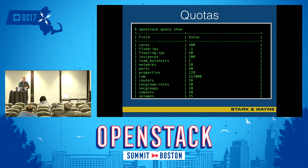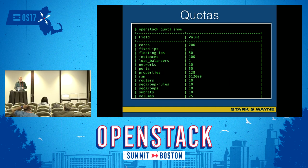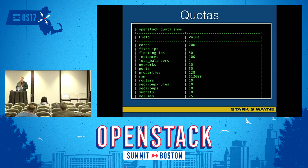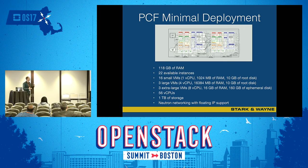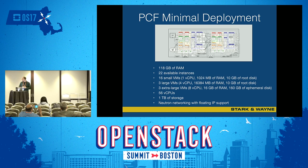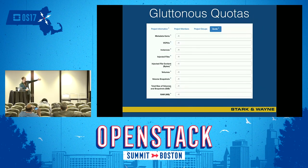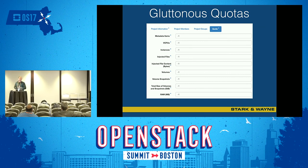Quota issues are also common, especially the first time you deploy things and especially if you have a large production deployment and your organization or tenant doesn't have the resources it needs. The big thing to consider is Diego, which is probably by far your largest consumer of resources because that's where your applications run. When you think about your quotas, you come back to the minimum deployment - Pivotal documents the minimum amount of resources needed to run a PCF deployment - so it should become pretty clear that quotas are a big deal. And then you might end up setting quotas to unlimited, which is probably also a bad idea.